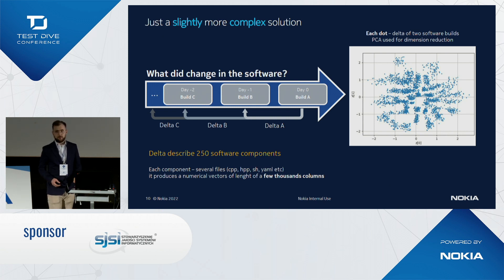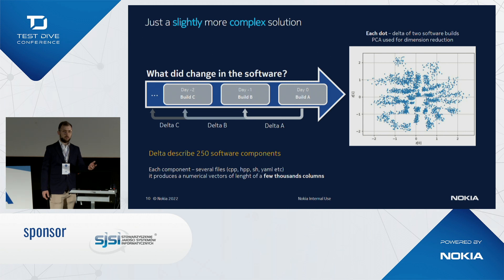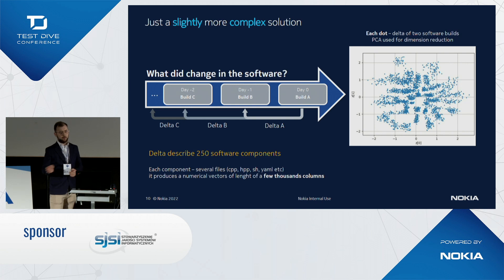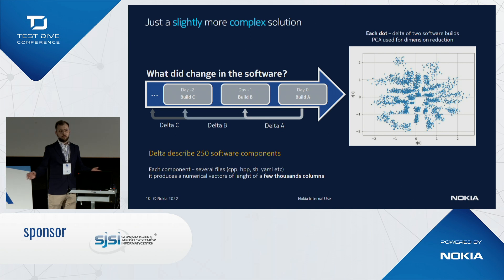Importantly, the deltas are not consecutive patches between each build. We don't create deltas between build A and B, then B and C. Instead, we extend the scope of changes by comparing today's build A with each historical build. So delta A is today's build A vs. build B, and delta B is today's build A vs. build C, spanning the changes over one day, and so on.